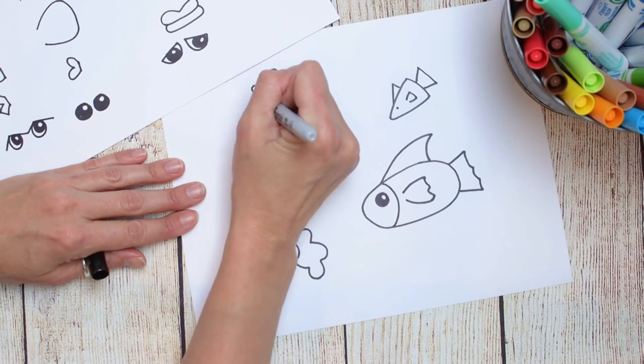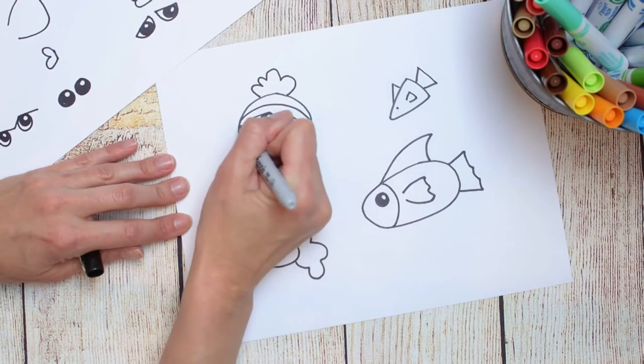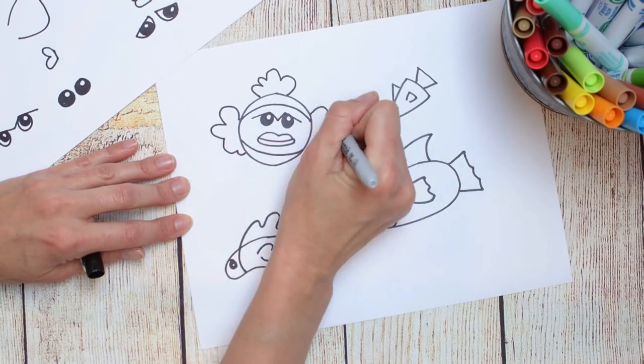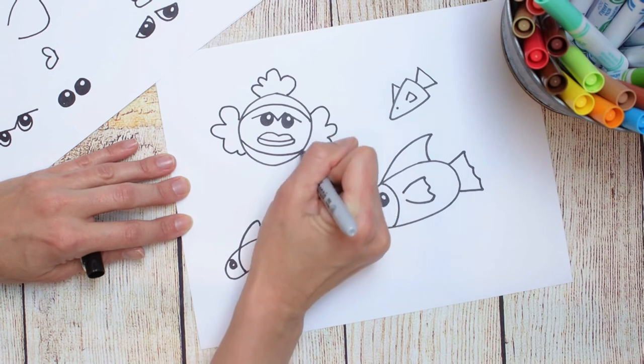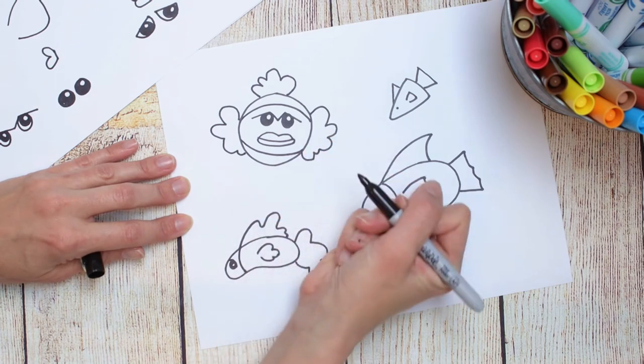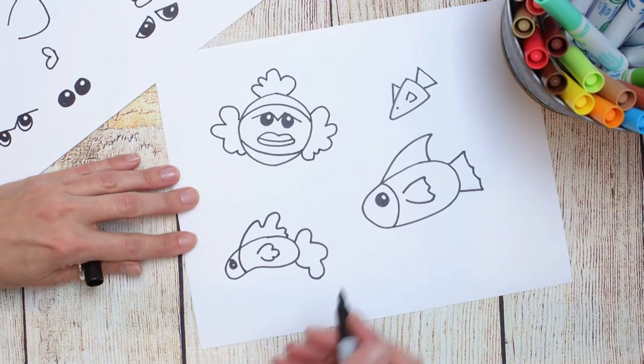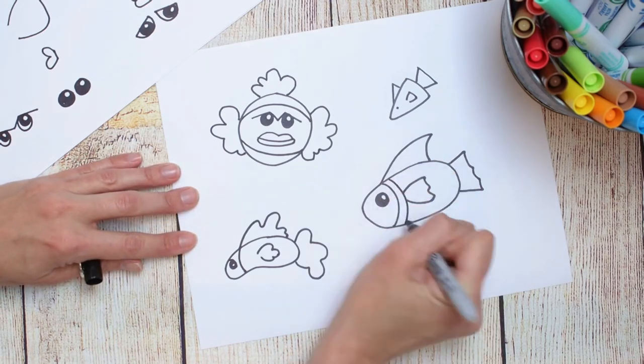And then his dorsal fin, that top fin, you're just going to see from straight on and the same with his side fins. And those are the bubbly kind of cloudy looking or like a flower almost lines that we practiced at the very beginning. But they all four have a very different look.